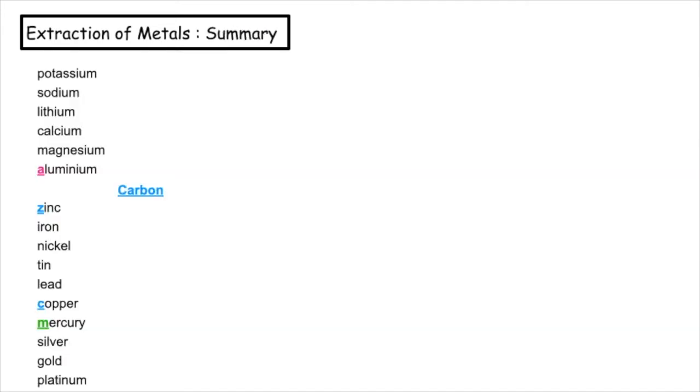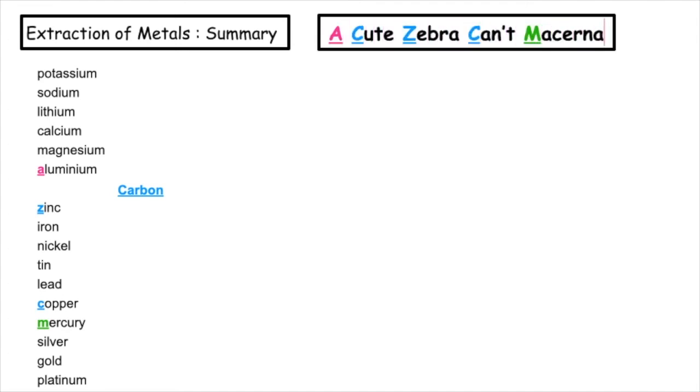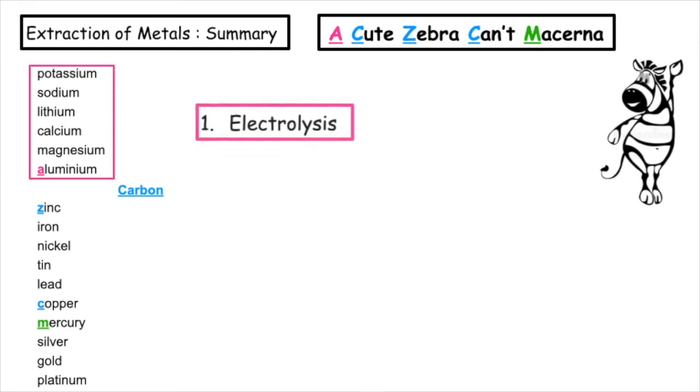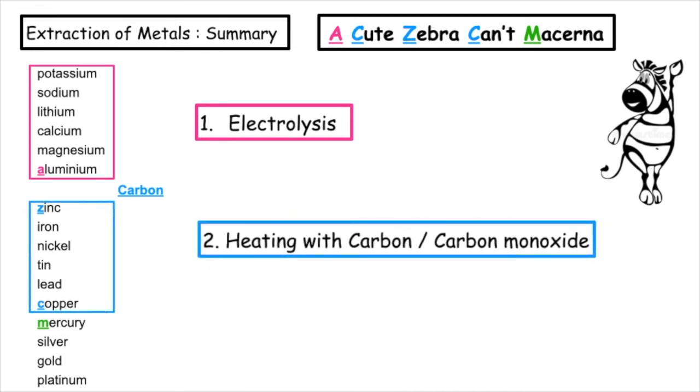The little story that I remember to remember the different types of extractions of metals is acute zebra can't macarena. Aluminum and above in the reactivity series needs electrolysis to split them up. Between copper and zinc we would be heating with carbon or carbon monoxide. And below copper, mercury and below, we would be using heat alone.